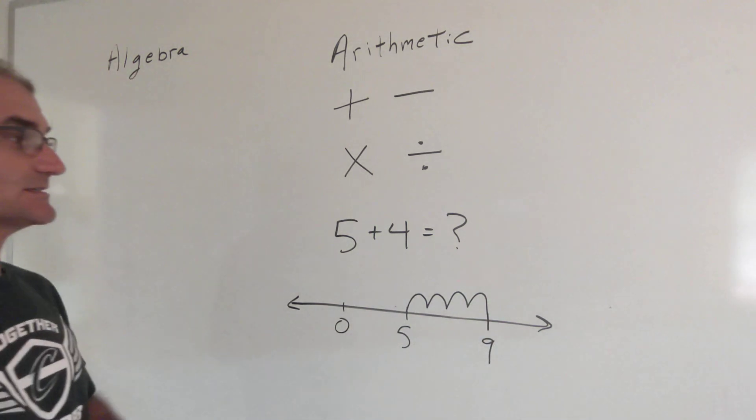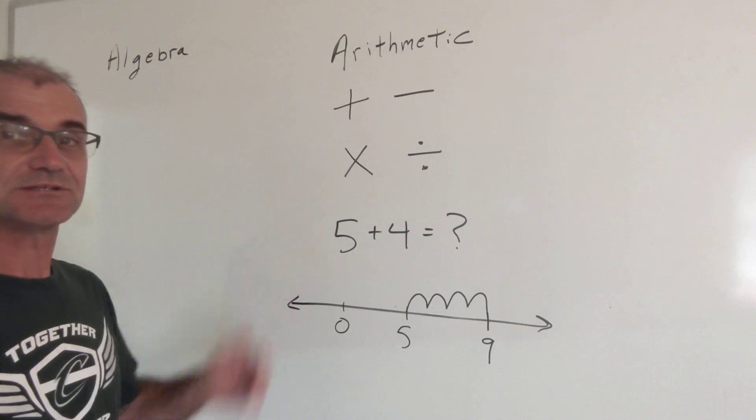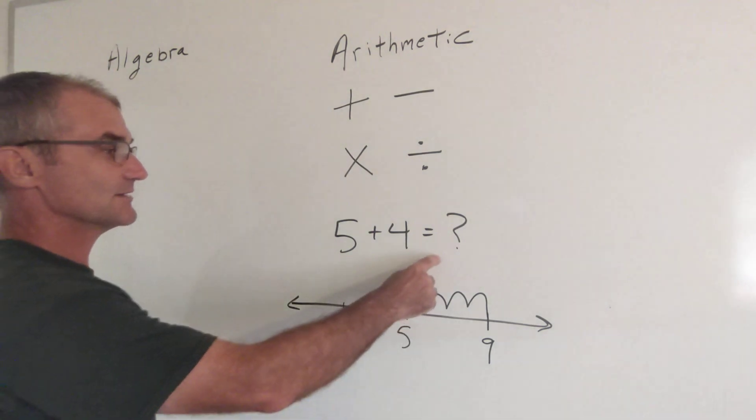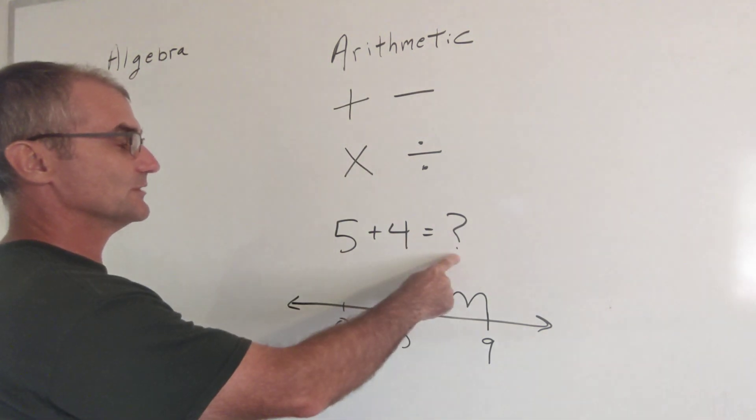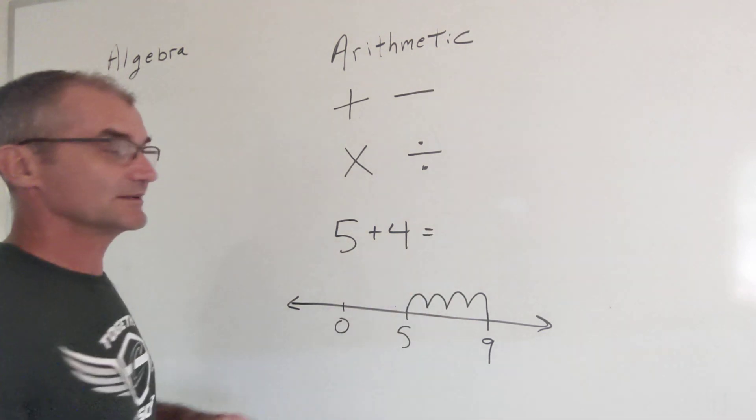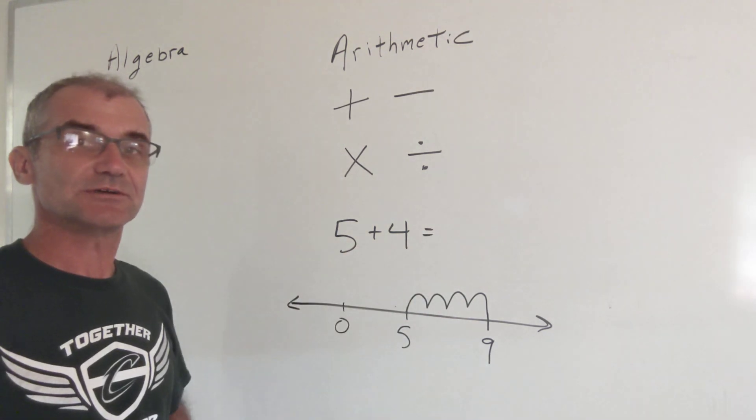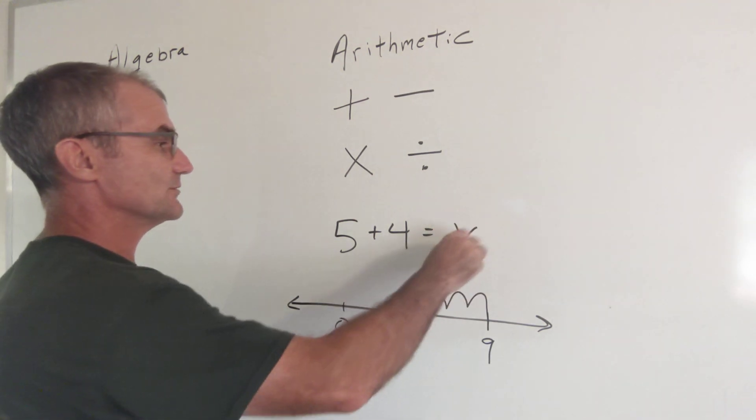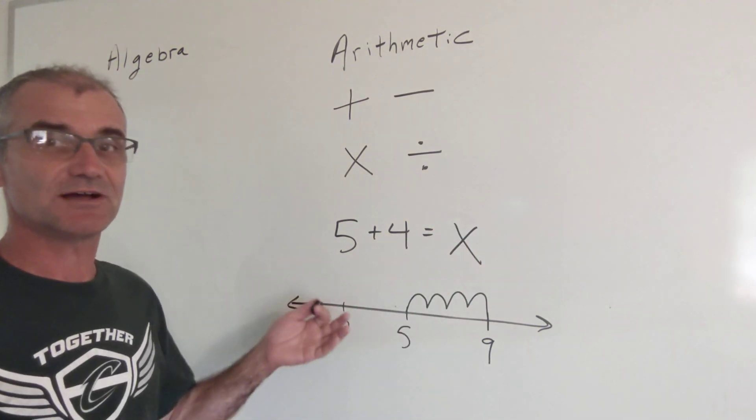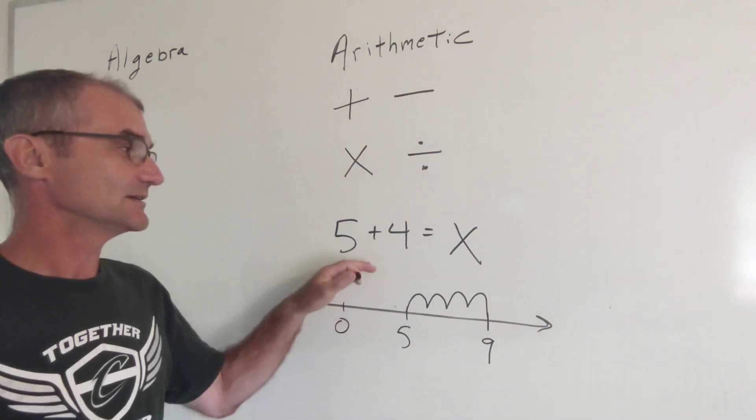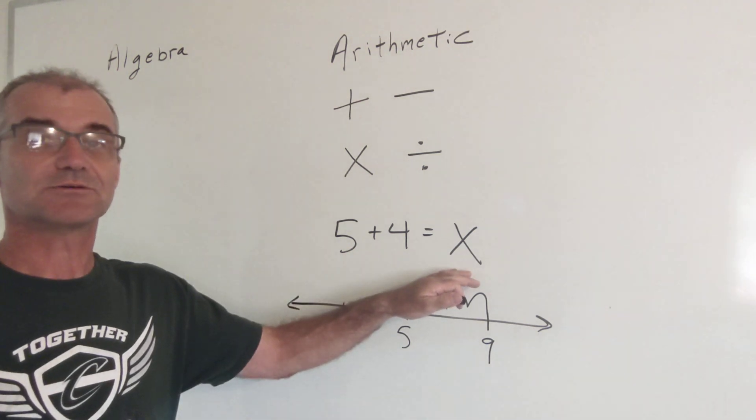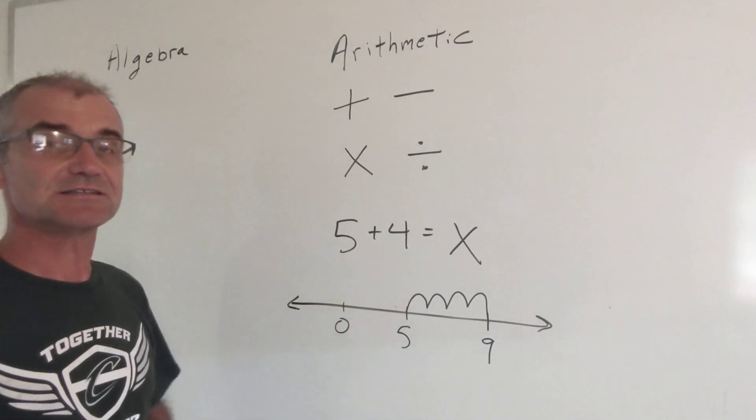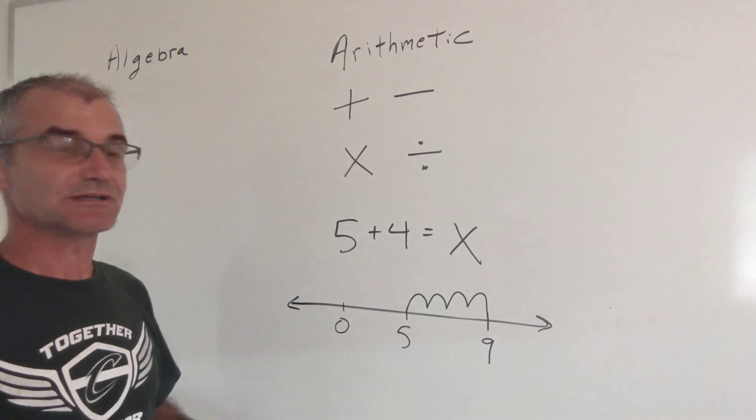And really the step from this to algebra is a really simple step. All you're saying right here, 5 plus 4 equals what? This right here is your unknown, and you're calling that unknown a variable. And really the only thing a variable is, is an unknown. So 5 plus 4 equals what? It's like saying 5 plus 4 equals x.